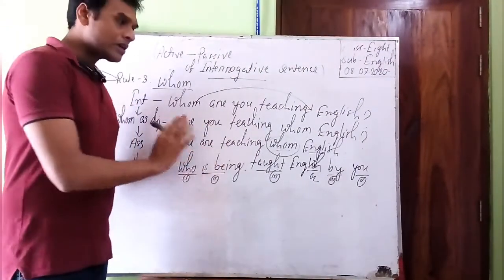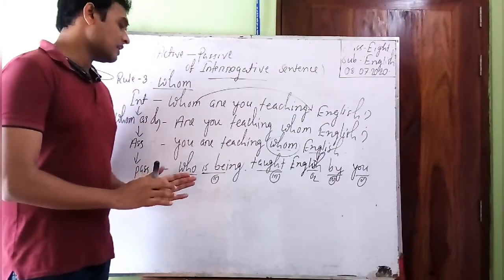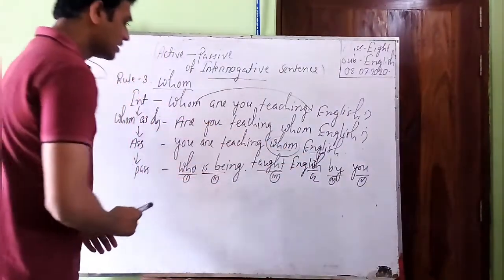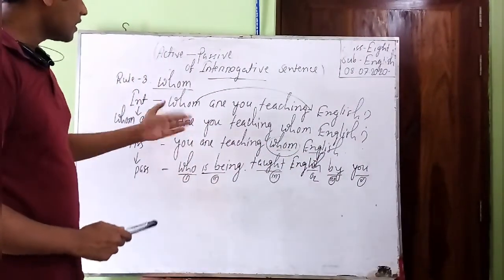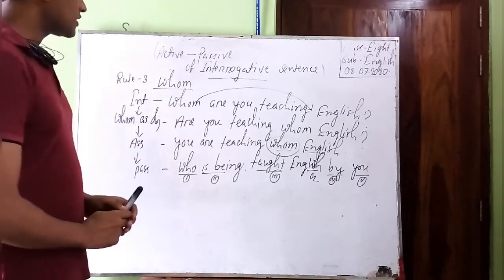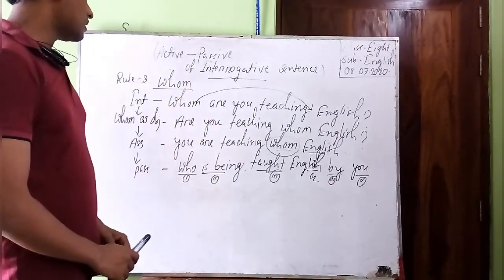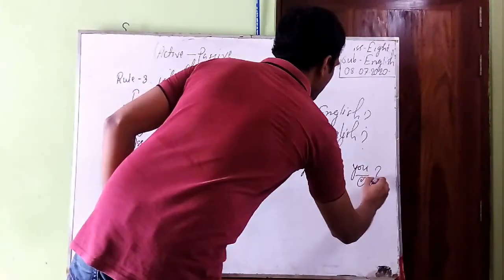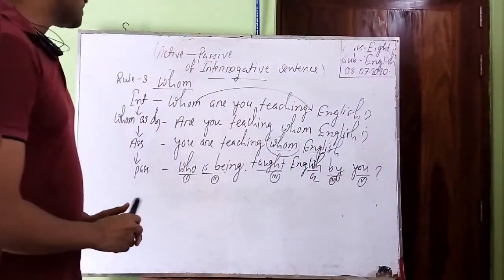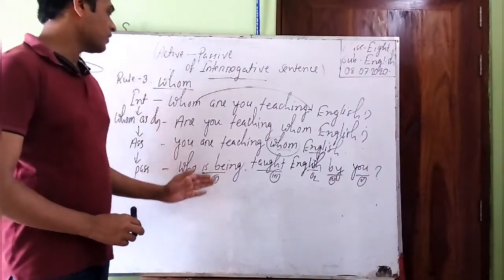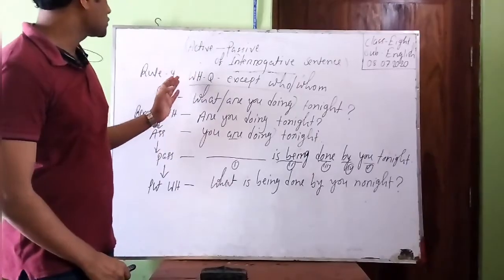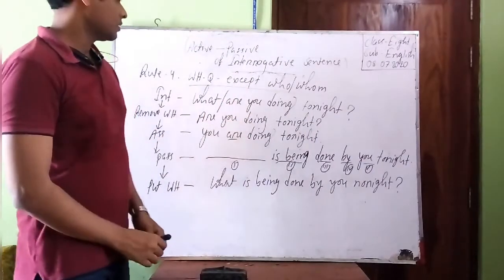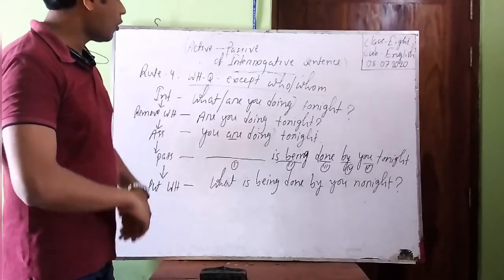Now we have done the passive. Since the original sentence was interrogative, we need to check if we need to make it interrogative form again. The passive is already in an interrogative-compatible form, so we can put a question mark here. That is the final rule — Rule Number Four — which is about all other WH-questions except 'Who' or 'Whom.'